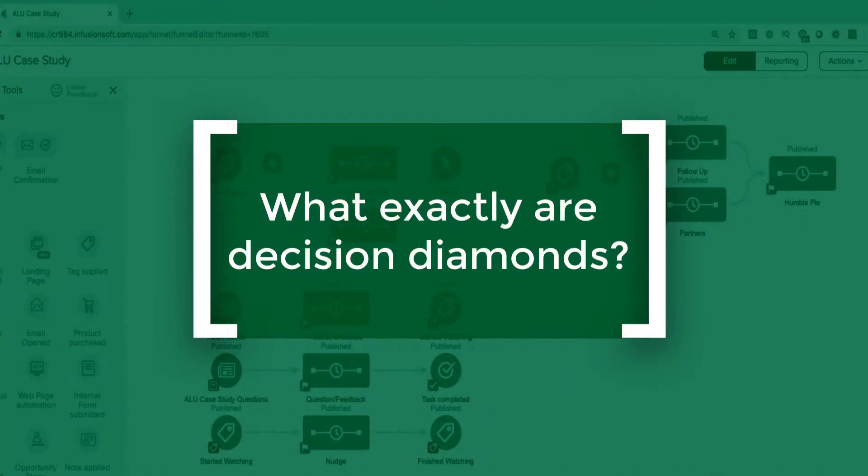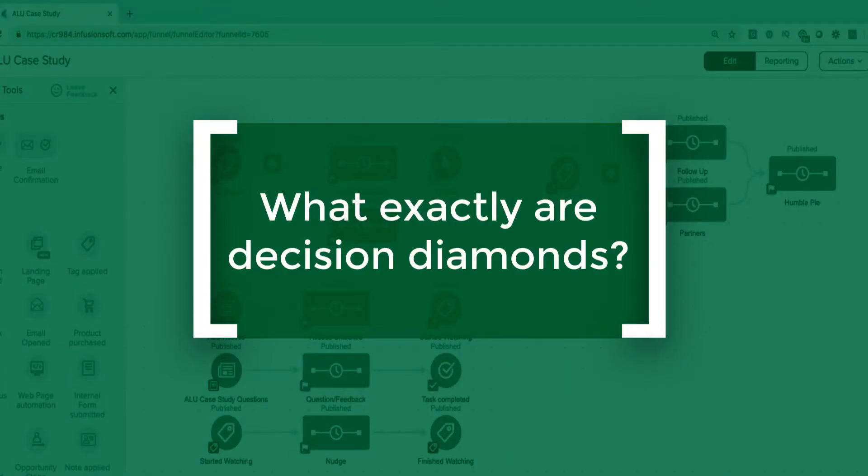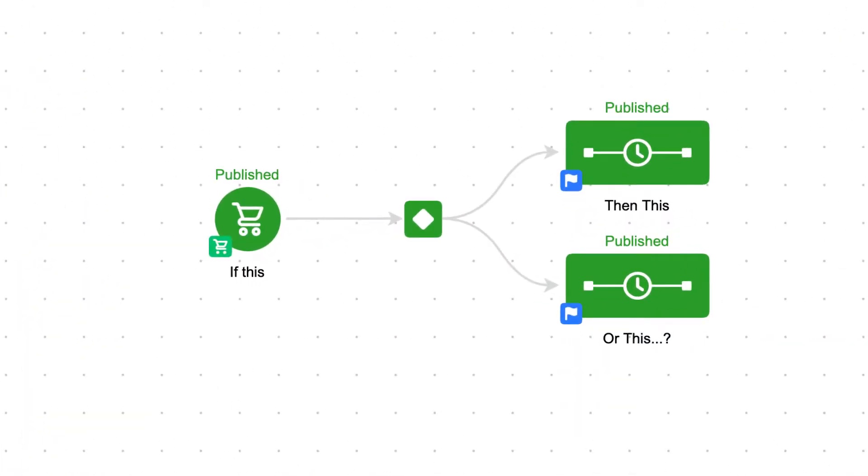Question number one: what are decision diamonds? Simply put, they are a tool within the campaign builder to decide when people take which path. If your campaign is linear and there's only one path, then you don't have a need for a decision diamond. The automation works simply — if this happens, then this happens — and that's totally fine. But without fail, there will be times in our businesses where we want different outcomes based on different information.